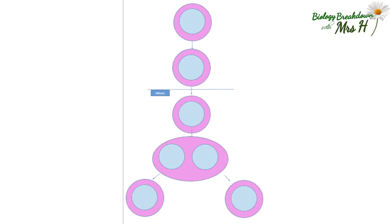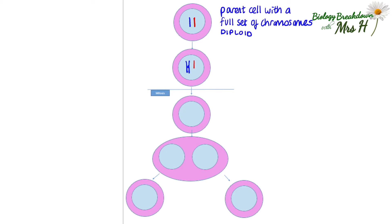When a cell is about to divide, the DNA becomes visible as chromosomes and in humans we have 23 pairs — one set of 23 from mum and the other 23 from dad. I am just going to draw one pair to keep things really simple. This cell is called a parent cell and has a full set of chromosomes. We say that the cell is diploid, and diploid just means full set of chromosomes.